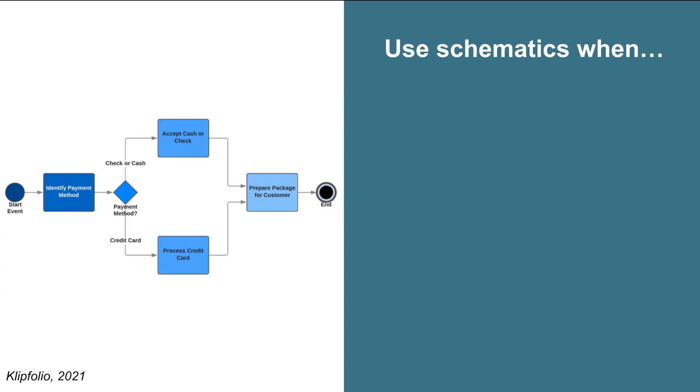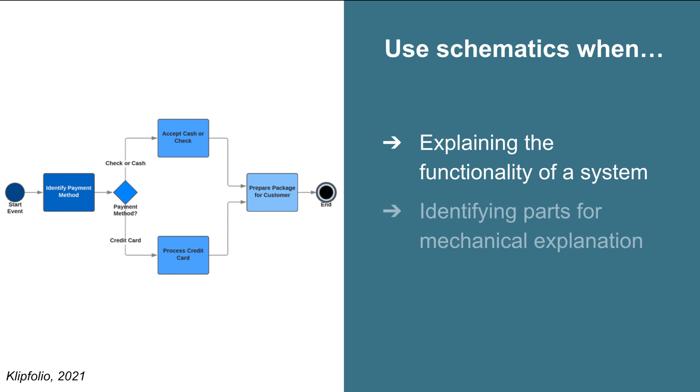Schematics in engineering documents are used when explaining how a system works by indicating various steps of the process, identifying different parts of a mechanical system or structure, or depicting the workflow of a project.